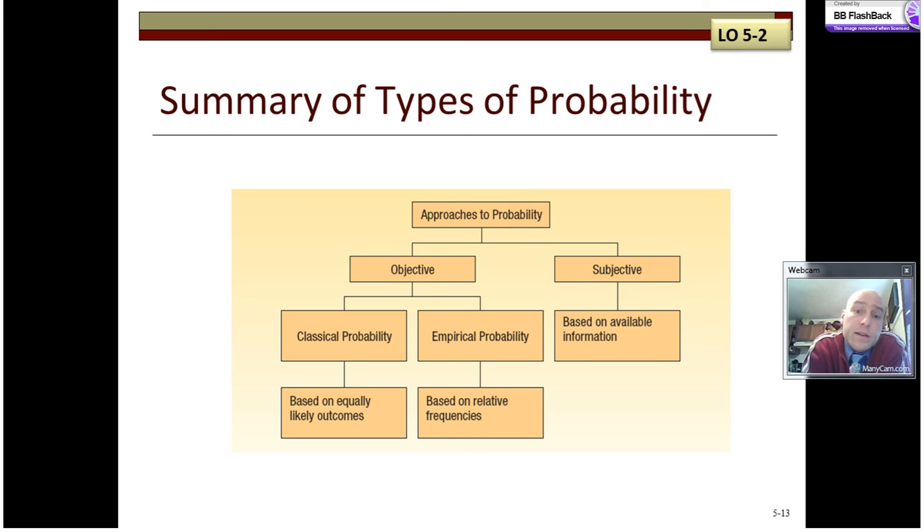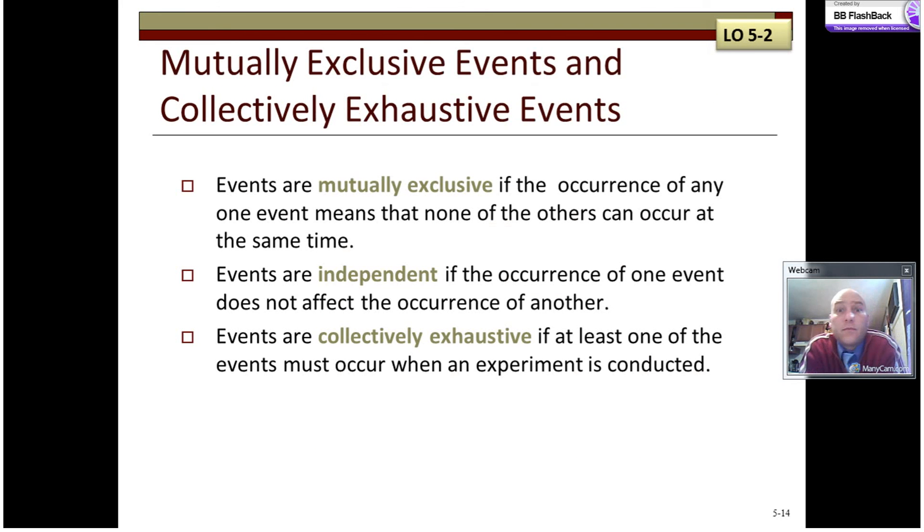In sum, there's objective and subjective approaches to probability. Objective ones are based on real proper measurement or our understanding of an equally likely outcome. Classical probability is based on equally likely outcomes. Empirical probability is based on relative frequencies based on our empirical evidence, our observed evidence. Subjective probability is based on the available information in the person, in the subject. So we've got classical probability, we've got empirical probability, we've got subjective probability. All of which describe our different ways that we can make predictions or understandings of probabilities of different events.